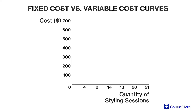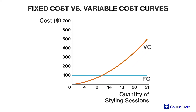If the beauty shop's rent is $100 per day and stylists cost $100 per day, the shop's cost can be plotted to create a graph. The fixed cost curve is flat and is the same whether output is zero or 21. At zero units of output, the variable cost is zero. As output rises, variable cost for a fixed number of hairstyles rises at an increasing rate because of diminishing returns.